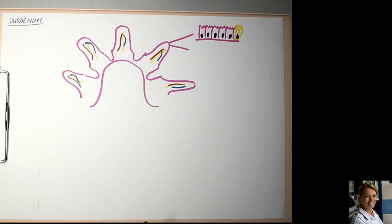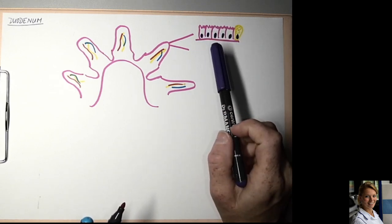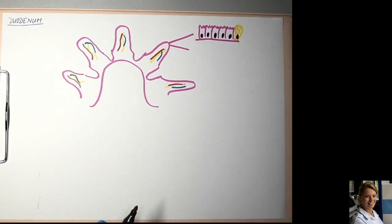The enterocytes have microvilli on their apical surface. Brush border is a microscopic visible striation formed by the microvilli. The microvilli is the next level of increasing the absorption surface.